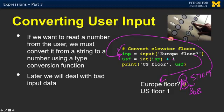We add one to it and store that in usf — a mnemonic variable name for United States floor. Inp is the input we got from the user. So we store this, and zero becomes one. Then we print out 'US floor' comma usf — remember the comma produces a little space. And so we have input, processing, and output in a way that builds us a complete application.